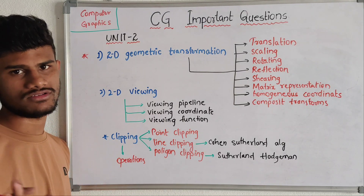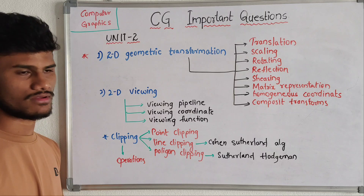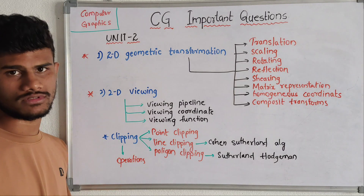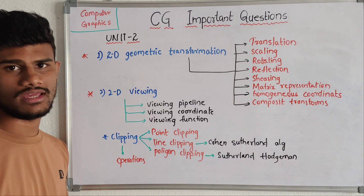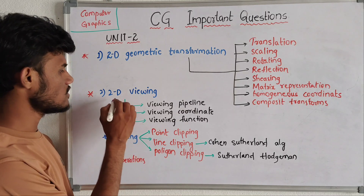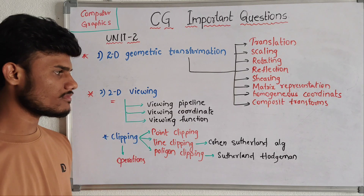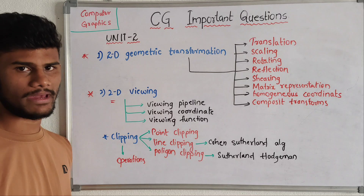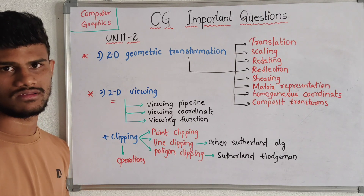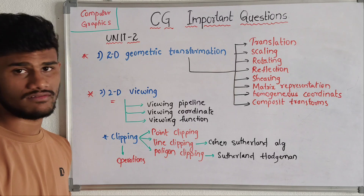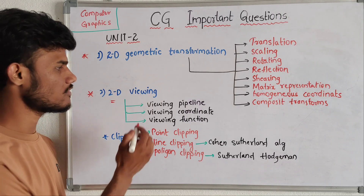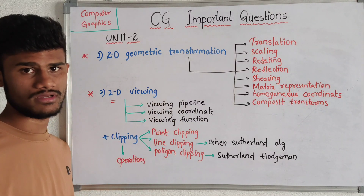Then next we have another important question — 2D viewing. In 2D viewing, we have viewing pipeline, viewing coordinates, and viewing function. These three are very very important views. If you learn these three parts of transformation and viewing, you can easily score 10 marks.